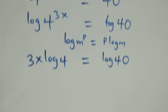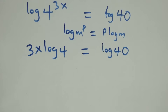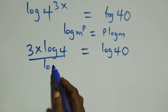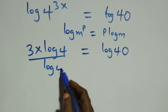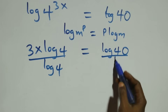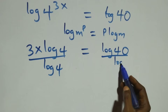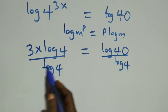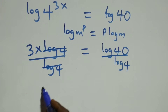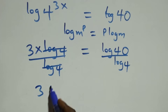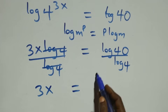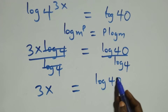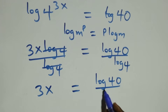Next step: we divide both sides by log four. Dividing this side by log four and also this side by log four. Log four cancels each other, and we have three x equals log forty over log four.